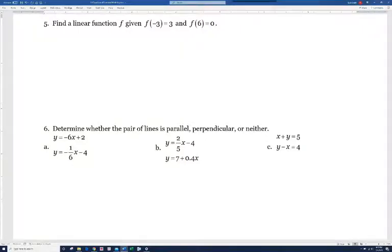In this video, we'll finish up what we were doing before when we were talking about using the point-slope form of a line. Number 5 is similar to what we just did with one extra step. If f(-3) = 3, that tells us a point on the graph of f. And if f(6) = 0, we have another point.